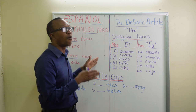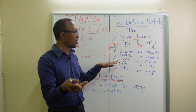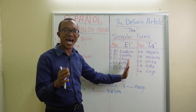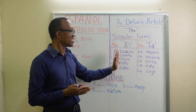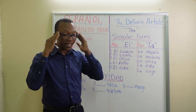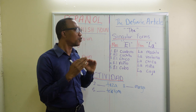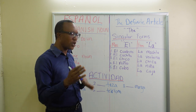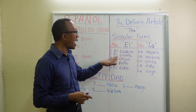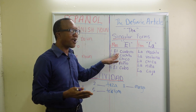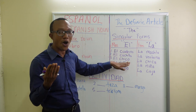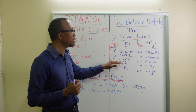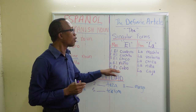There's no English on the board, and that is deliberate — you are learning a foreign language, and the brain retains Spanish better when you do not see the English beside it. Please repeat after me: el cuaderno, el cuchillo, el chico, el niño, el cubo. Muy bien! Notice they all end in 'o' — the masculine form.